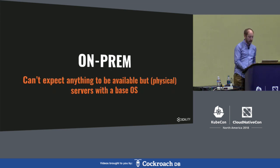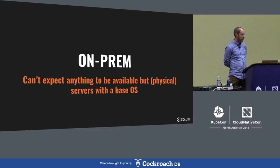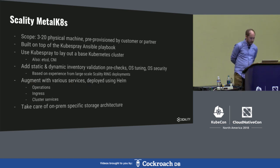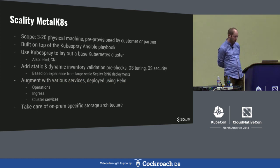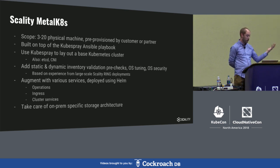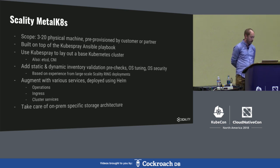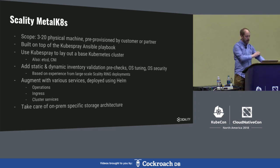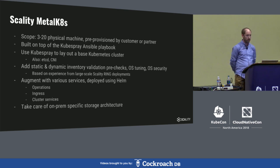It is on-prem — based on physical machines with only a base operating system available, and lots of the functionality you get in a cloud environment is not available. The scope of this project is roughly three to 20 machines. It likely works with more machines as well because in the end this is just stock Kubernetes, but it's not something we aim for or test because it's out of scope for the product.